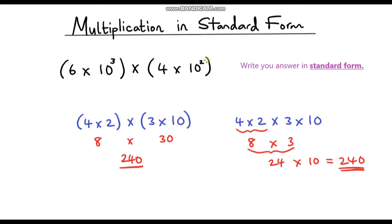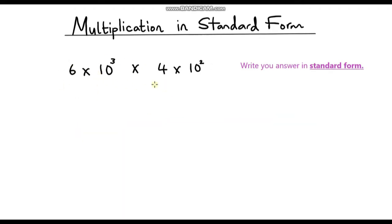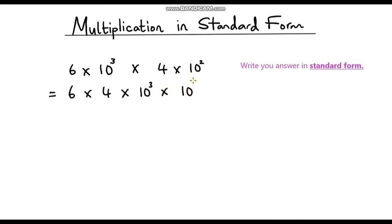So going back to our example, we can remove the brackets and also change the order. I'm going to group together all of the terms that look similar — we've got 6 and 4, and we've got the powers of 10. So I'm going to write down 6 times 4 times 10 to the power 3 times 10 to the power 2. I haven't changed the calculation, just reordered it to make things a bit simpler.